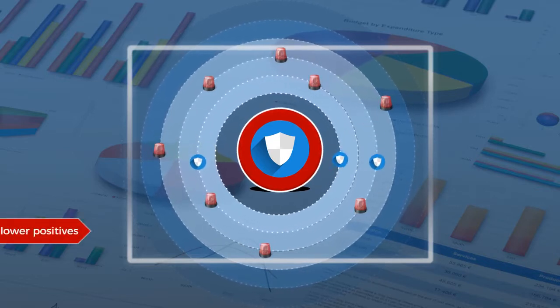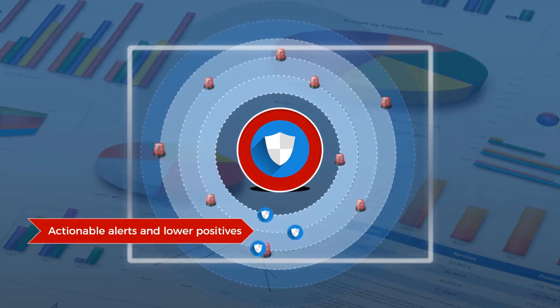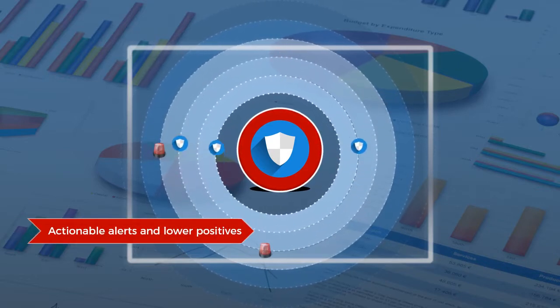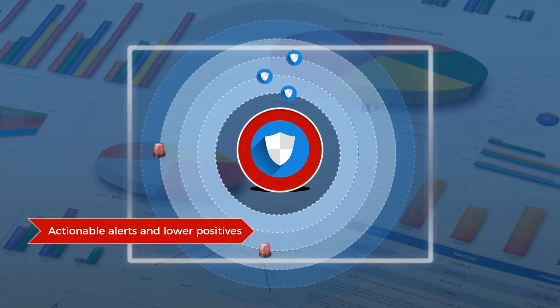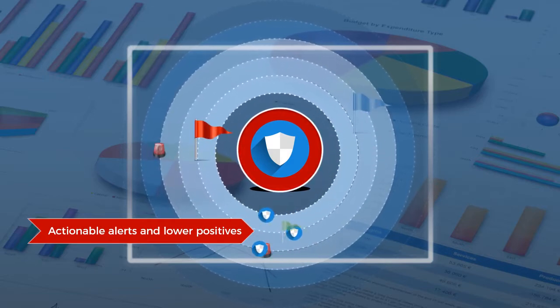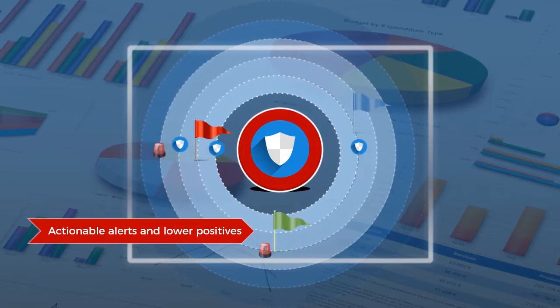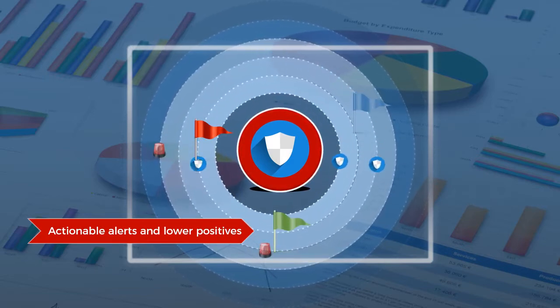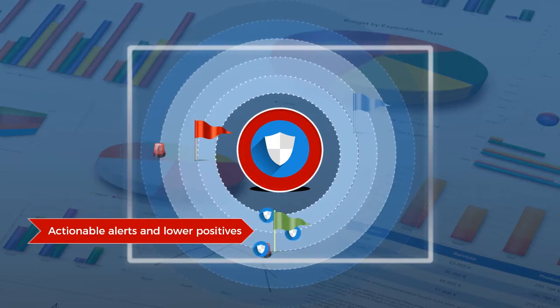If you don't see similar indicators of compromise in other sources, the alert can be ignored or set on low priority. Scoring of alerts this way makes it more reliable.